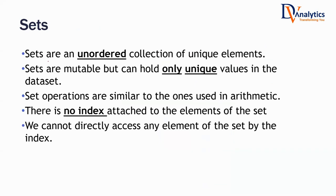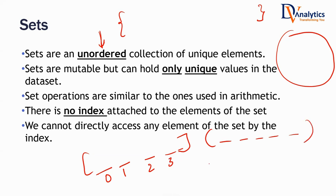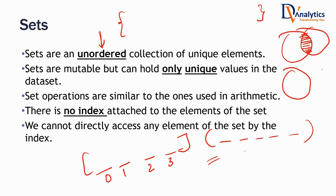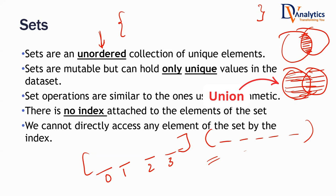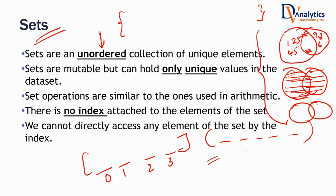A set is simply a collection of unordered unique values. When you imagine a list or a tuple, you imagine elements in order — first, second, third, fourth. But in a set, there is no ordering. Think back to school days: Set A, Set B, intersection, union — those are exactly these sets. In school, the set values were like one, two, three, four, five with no ordering, and common values formed intersections.